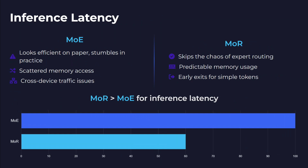On inference latency, MoE looks efficient on paper but stumbles in practice. It has scattered memory access and cross-device traffic issues, because loading the entire model means it spans different devices — 200 GBs can't fit on a single chip — so activating different parts becomes a problem. MoR avoids the chaos of expert routing, provides predictable memory usage, and supports early exit for simple tokens. In terms of inference latency, MoR is clearly better.